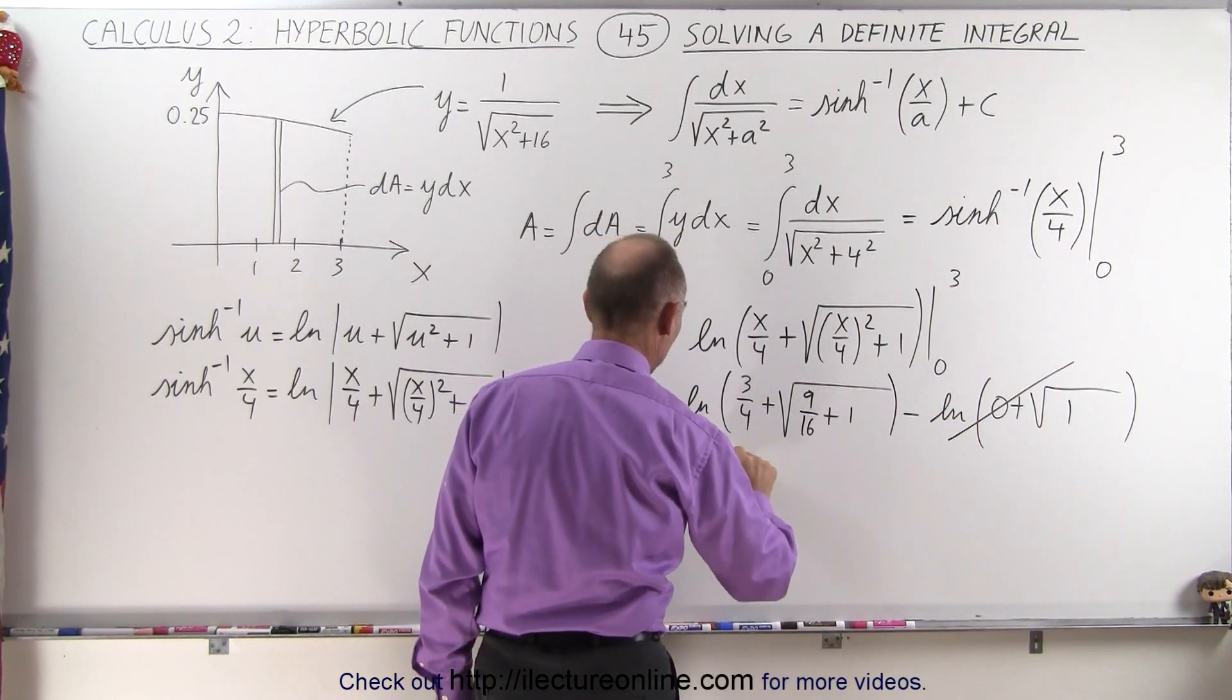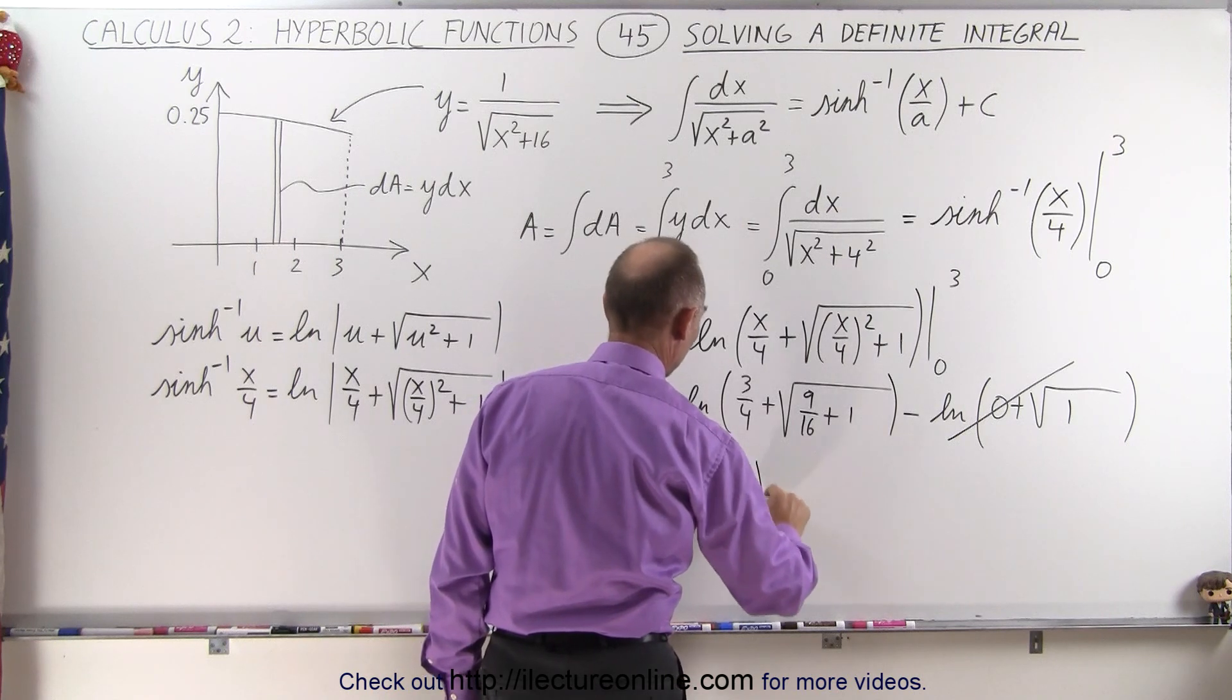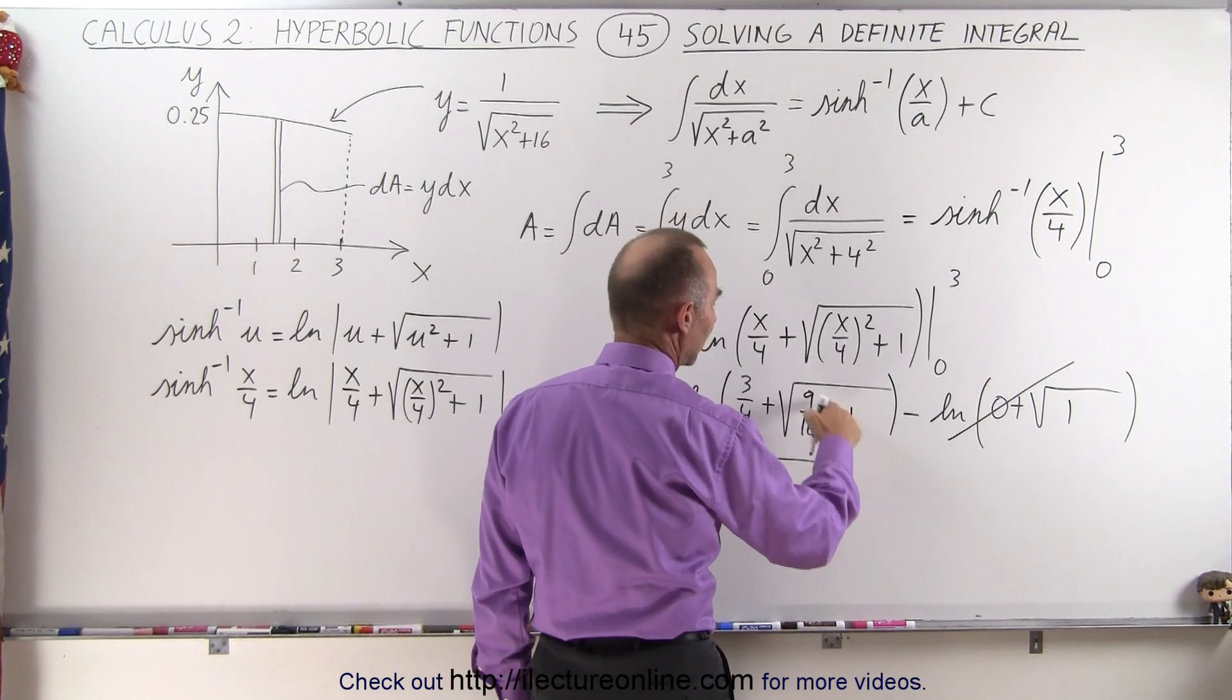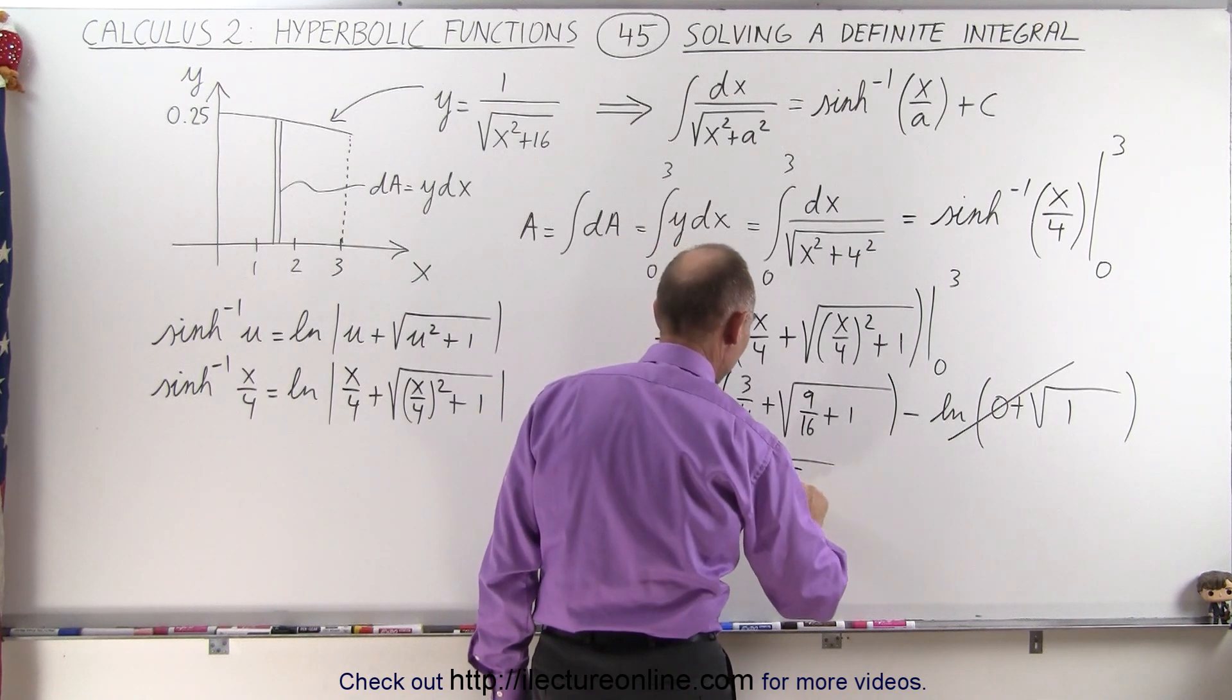Simplifying this, this is equal to the natural log of 3 over 4 plus the square root of, well, this can be 16 over 16 plus 9 which is 25 over 16.